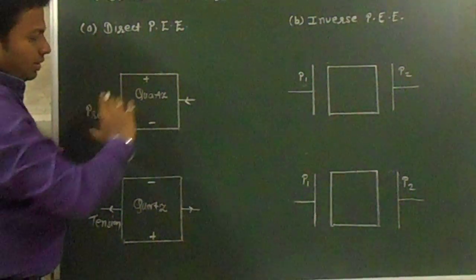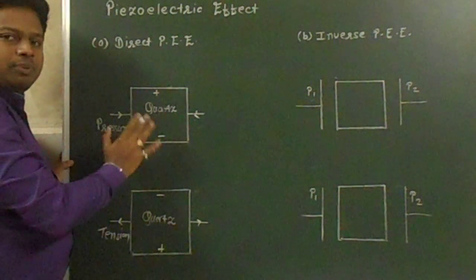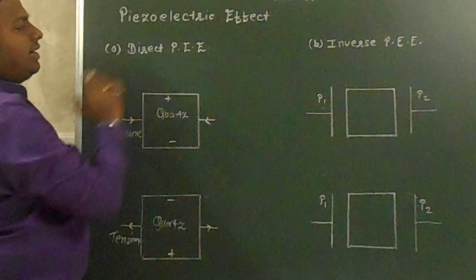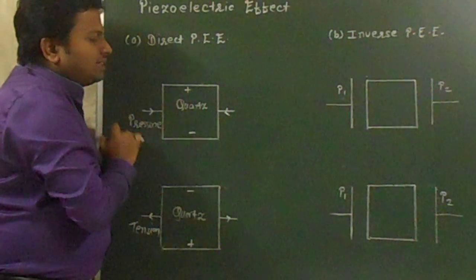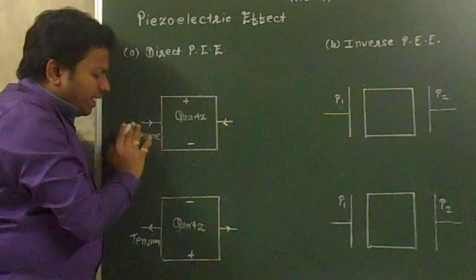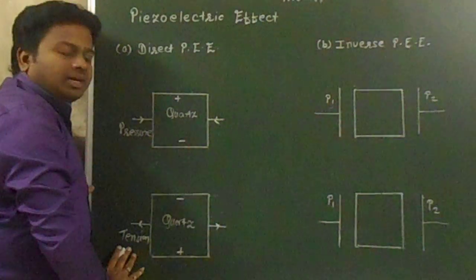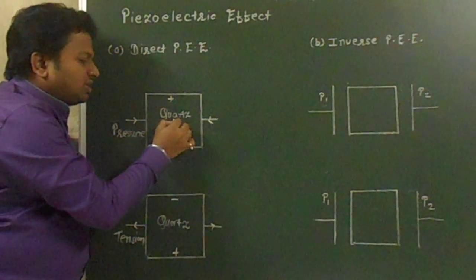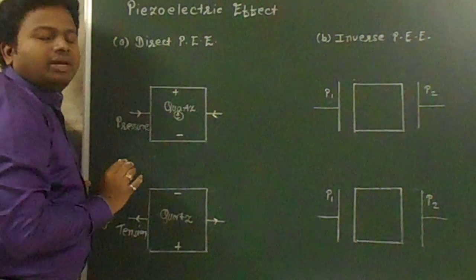Due to the application of lateral pressure or tension, a potential difference is developed. The potential difference developed in both cases is of opposite polarity. This effect is known as the direct piezoelectric effect. The question is why the upper side acquires positive charge and why the lower side acquires positive charge — whether you apply pressure or tension.